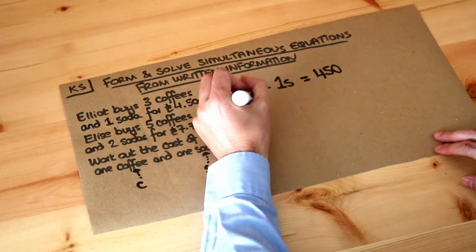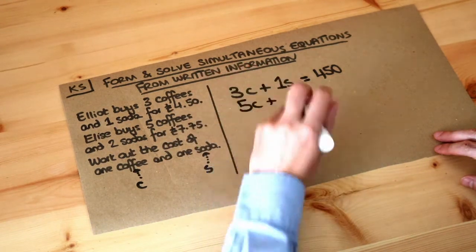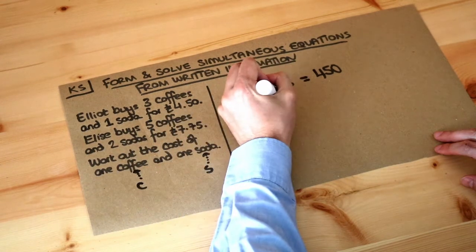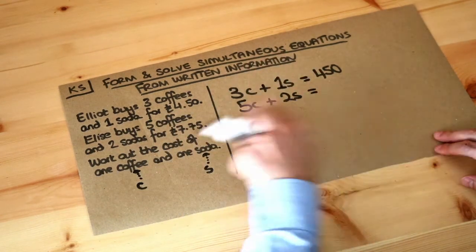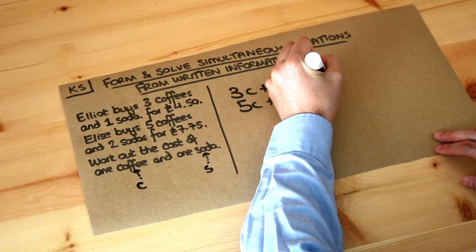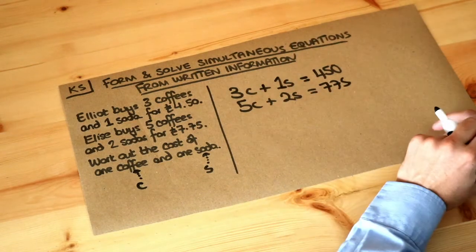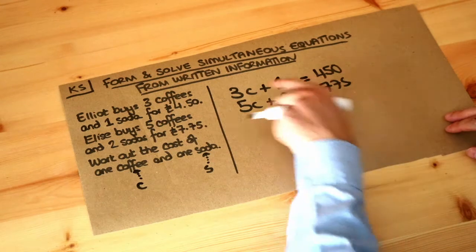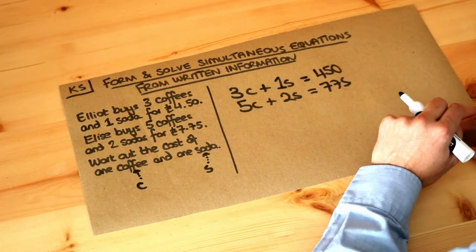Then we have five coffees, so five times c, plus two sodas, which is two times s, equals £7.75, or 775 pence. Now we've got simultaneous equations: two equations with two unknowns, c and s, and we want to solve them.